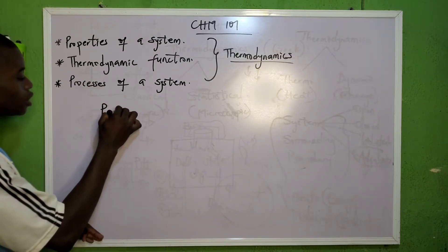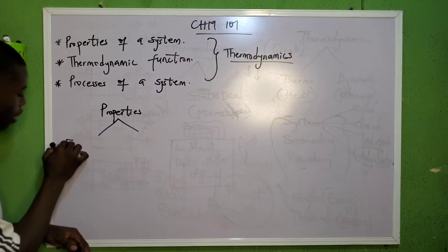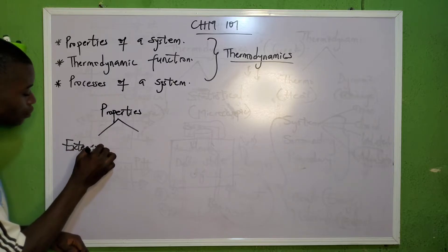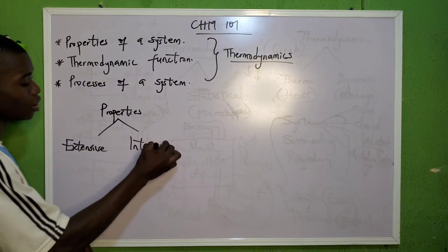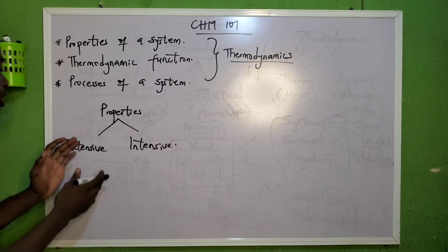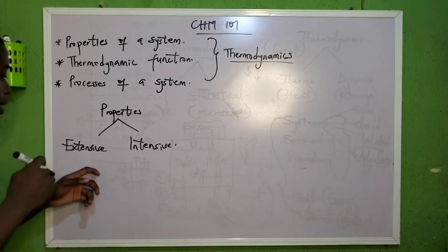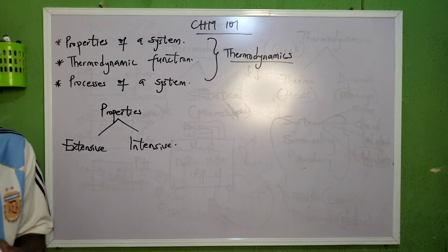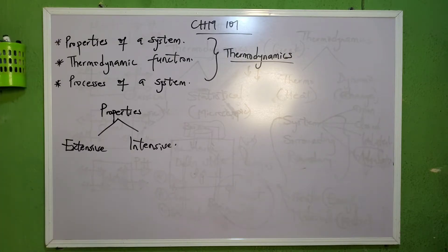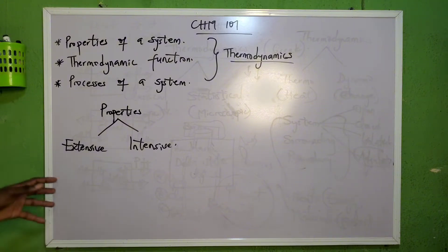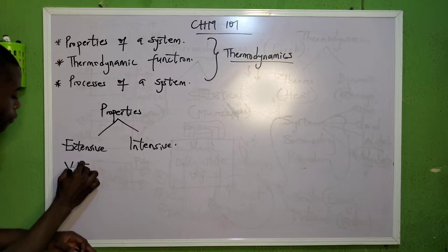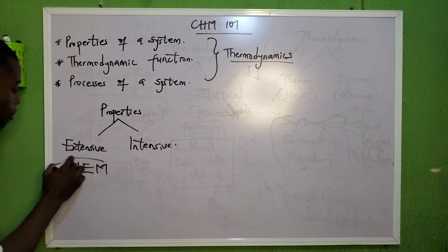In terms of the properties of a system, there are two properties. The first one is extensive properties and the second is intensive properties — also called external and internal properties. The extensive property of a system is dependent on the magnitude of the material of the system. To remember the examples, I give the name VIEM — V-I-E-M.